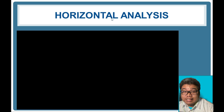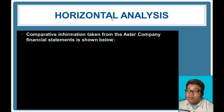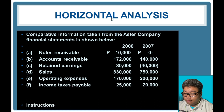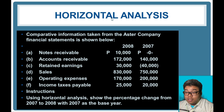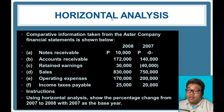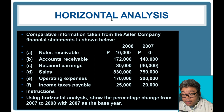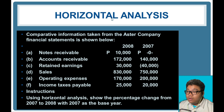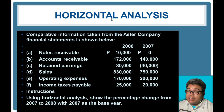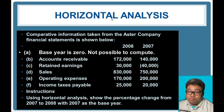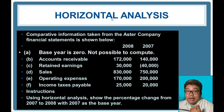Now let's answer a practice problem. Comparative information is taken from the Astor Company — the financial statements are shown below. We use horizontal analysis to show the percentage change from 2007 to 2008, with 2007 as the base year. For letter A, notes receivable: from zero it is now 10,000. The answer is that it cannot be computed because the base year is zero — when the base is zero, you leave it blank or mark it as not possible.